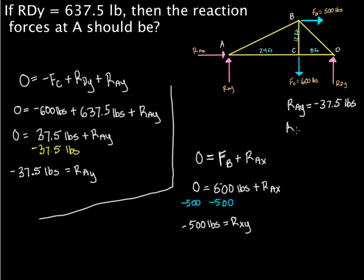And you get negative 500 pounds equals R_AX. So R_AX should actually be a negative 500 pounds. And the negative is telling us that it's actually going to the left, not to the right. And this negative 37.5 is telling us it's actually going down, not up. Negative is going down, positive is going up. Negative to the left, positive to the right.